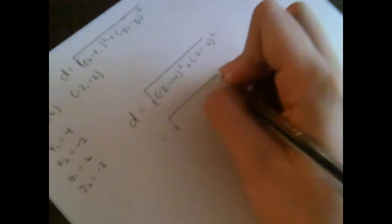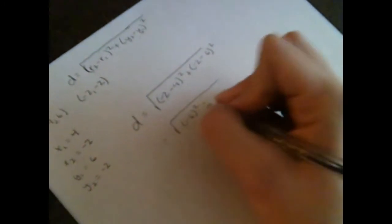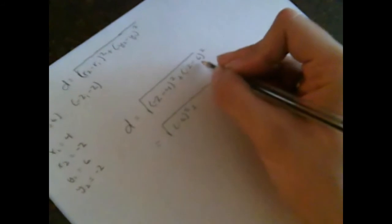So we get the square root of x2, which is negative 2, minus x1 squared plus y2, which is negative 2, minus y1 squared. And now all we have to do is reduce this. So we get the square root of negative 2 minus 4, which is negative 6 squared, plus negative 2 minus 6, which is negative 8 squared.